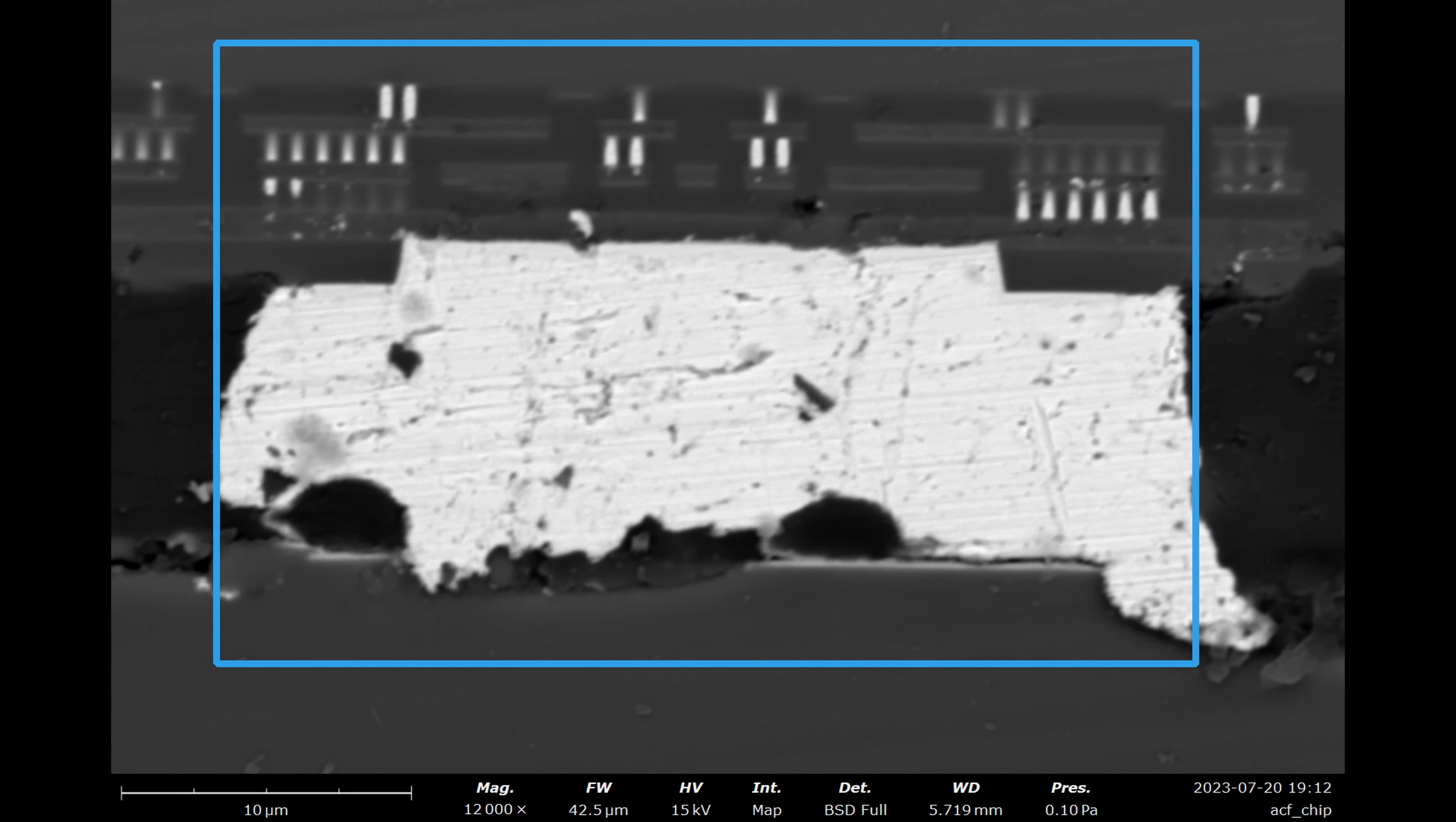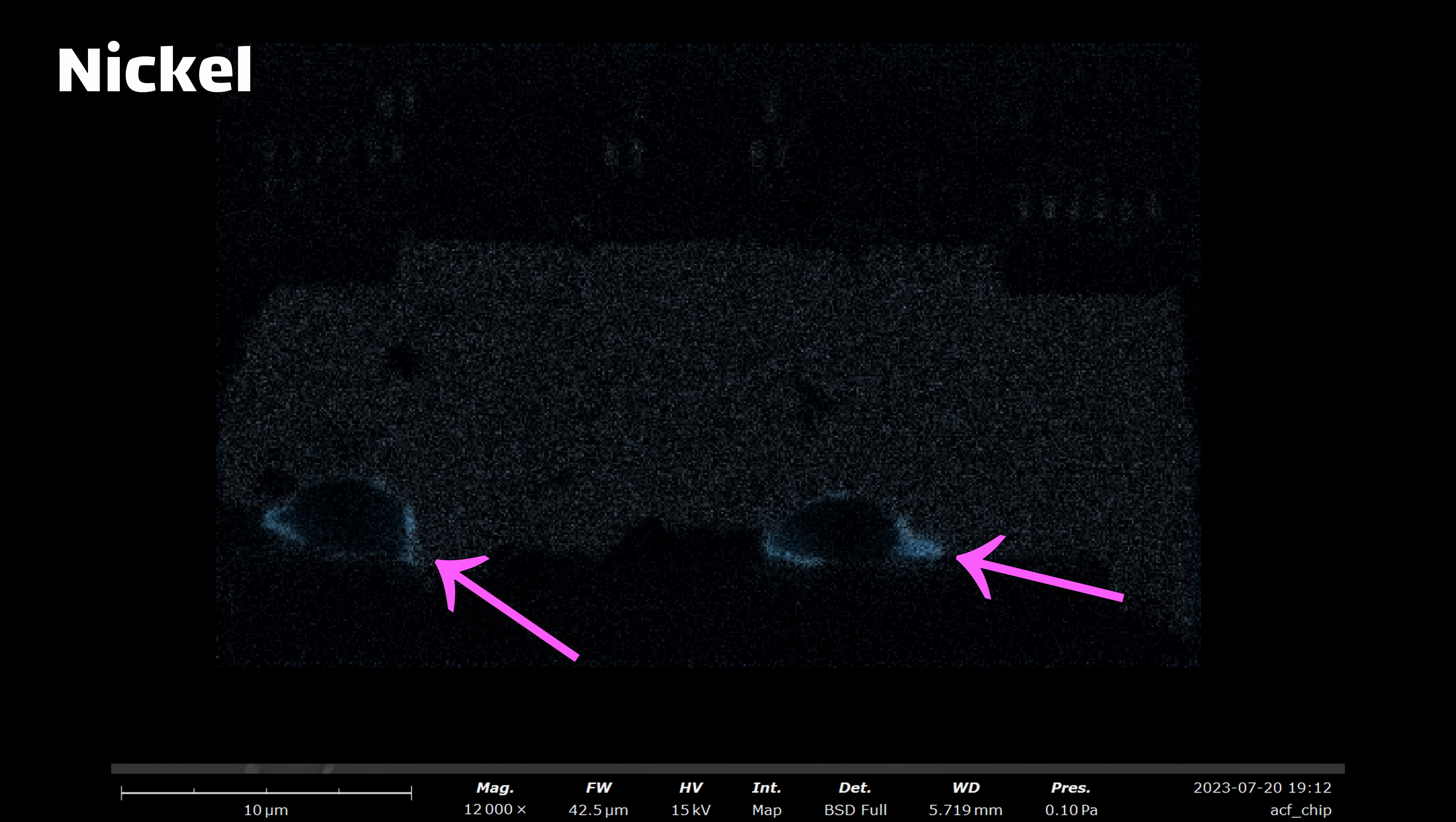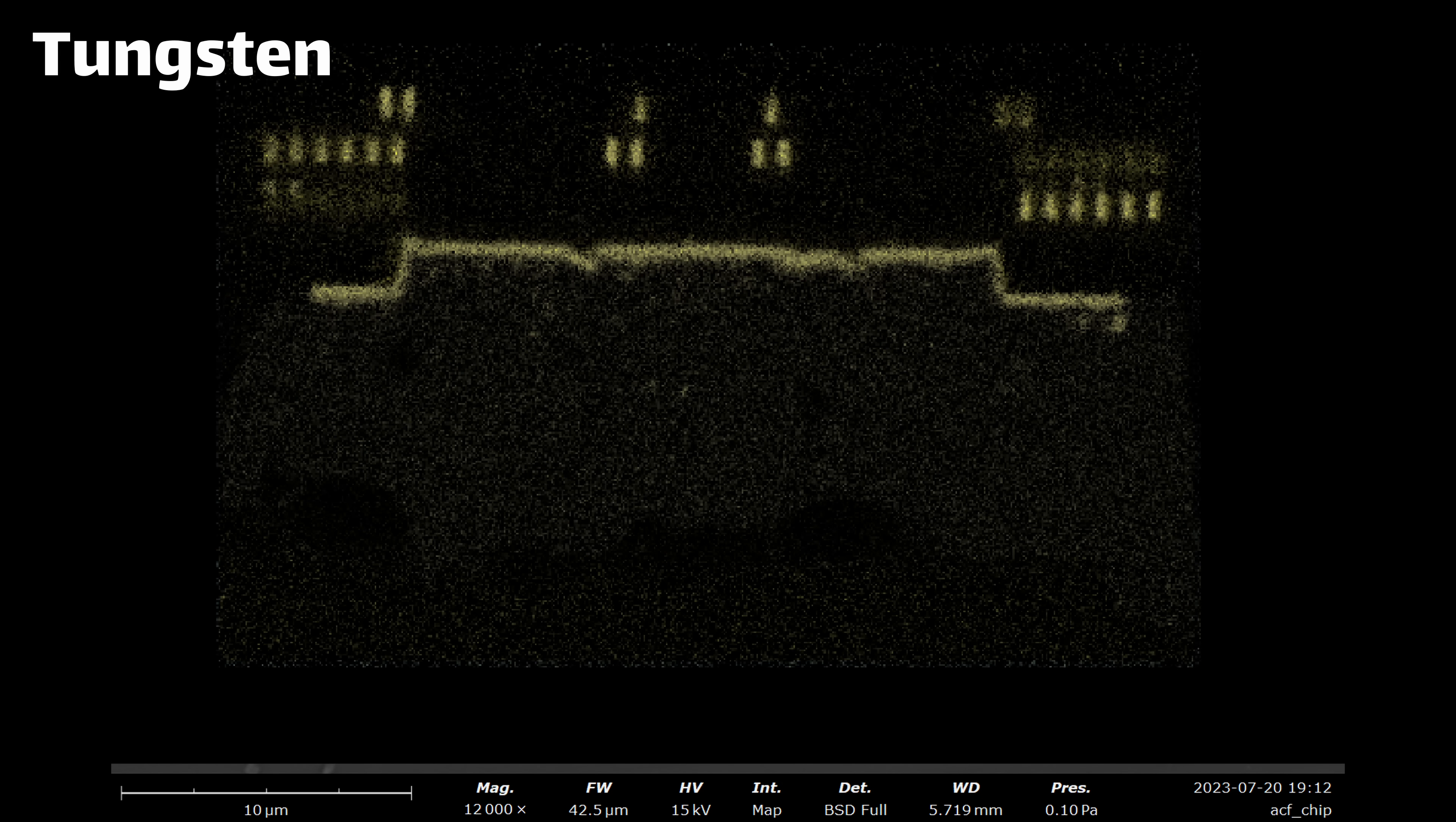The microspheres are pretty hard to see from just a regular photo, but are easy to spot when we look at the nickel image. You can also see some of the circuitry of the chip itself. So there are silicon features, aluminum interconnects, and tungsten vias.